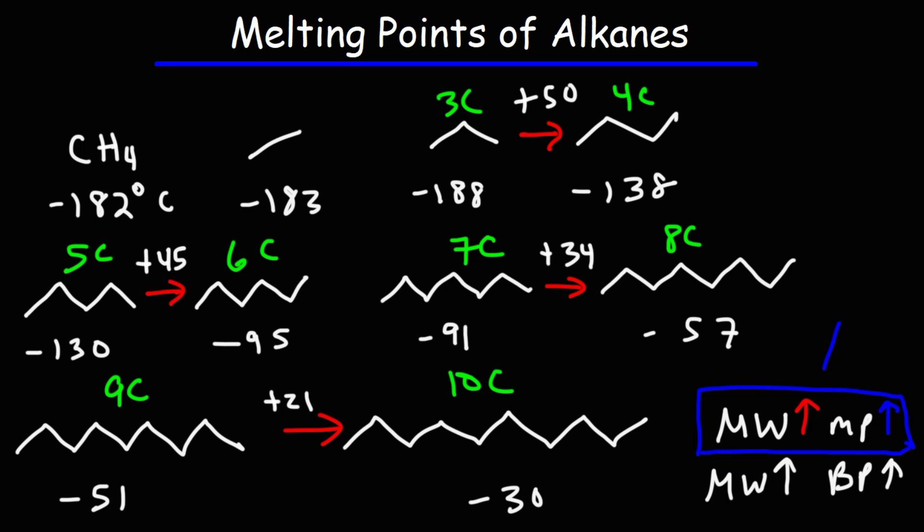Now, as the chain progressively gets longer and longer, the increase in the melting point from an odd number of carbon atoms to an even number of carbon atoms, we can see it's decreasing. Here, the increase is 50. Here, it's 45, 34, and 21. So eventually, it's going to level off. But generally speaking, as you add more carbon atoms in the carbon chain, the melting point of the alkane will increase.